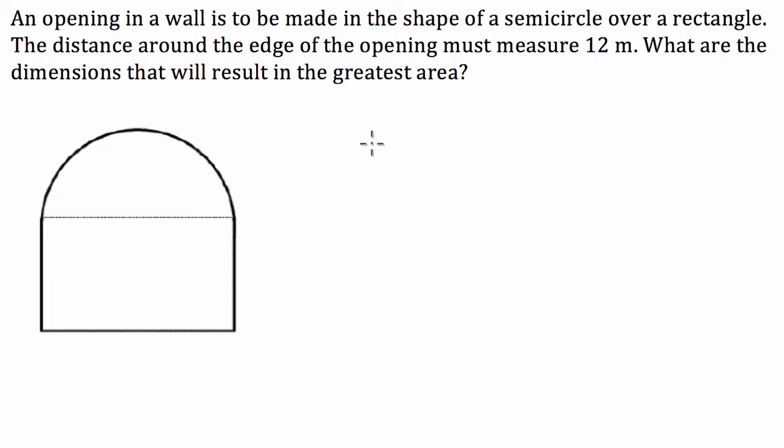The question says that we've got an opening in a wall that is to be made in the shape of a semicircle over a rectangle. Now that's what we have right here. The distance around the edge of the opening must measure 12 metres. So from the question we know that the perimeter of this shape has to equal 12 metres.